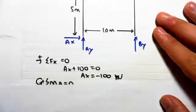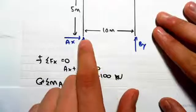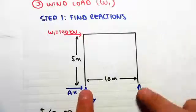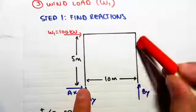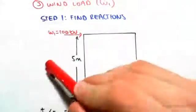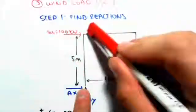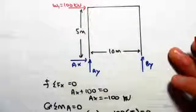Now taking moments about A, so moments about that point there, anticlockwise is positive. So By times by 10, its lever arm, is going to be going around A there which is, as you see by my pen, anticlockwise. So By by 10 is positive.